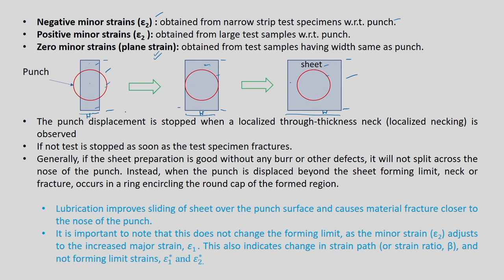In between the narrow and wide sheets, you can assume two different widths. Deforming these gives limit strains at various strain paths — 1, 2, 3, 4, 5, 6, 7 different strain paths. From the top view, you can also see that the draw bead is used to clamp the sheet circumferentially. The punch deforms the central part of the sheet, and the clamped region in the flange area is not allowed to draw in — that is the whole idea of this test.